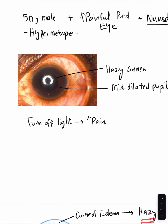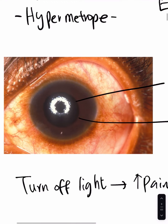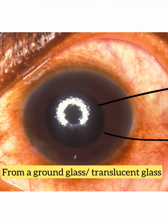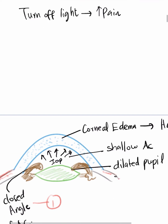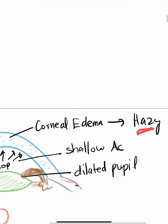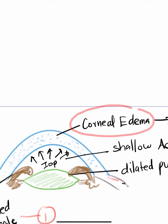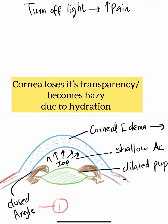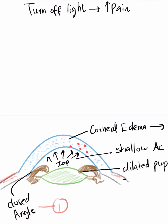Why is the cornea hazy? As seen in the image, when you shine a torch on the cornea the reflection is not clear — it resembles a reflection from ground glass or translucent glass. This is because the cornea is edematous, filled with water clefts that increase corneal thickness.